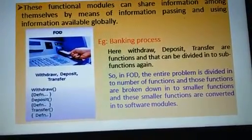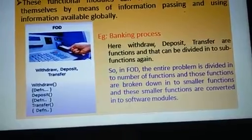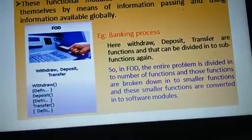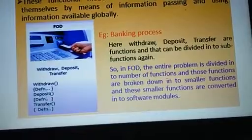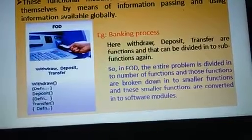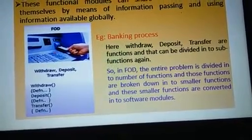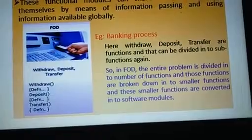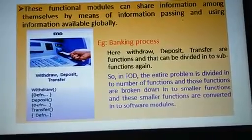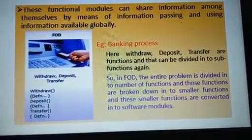For example, a banking process is the main function and its sub-functions are withdraw, deposit, and transfer. These are all interconnected. If you want to withdraw, you decrease the cash amount. If you want to deposit, you increase the cash. If you want to transfer, cash moves between accounts. Everything is inter-related, so in functional modules you need to share information globally. That is Functional Oriented Design.